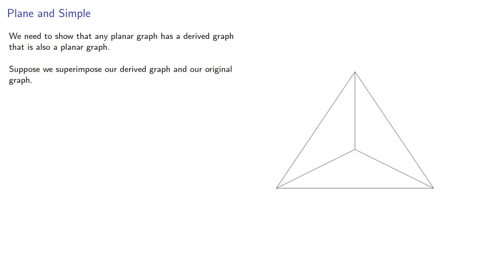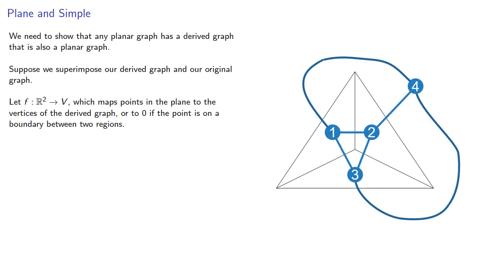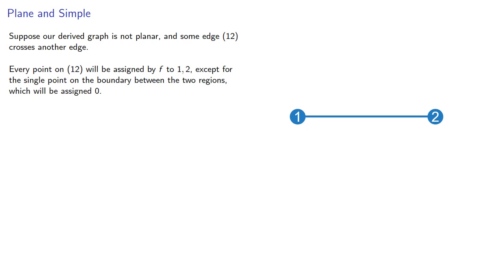We need to show that any planar graph has a derived graph that is also a planar graph. Suppose we superimpose our derived graph and our original graph. So let's take a function which maps points in the plane to the vertices of the derived graph, or to 0 if the point is on a boundary between two regions. In other words, this function will identify which region a point is in.